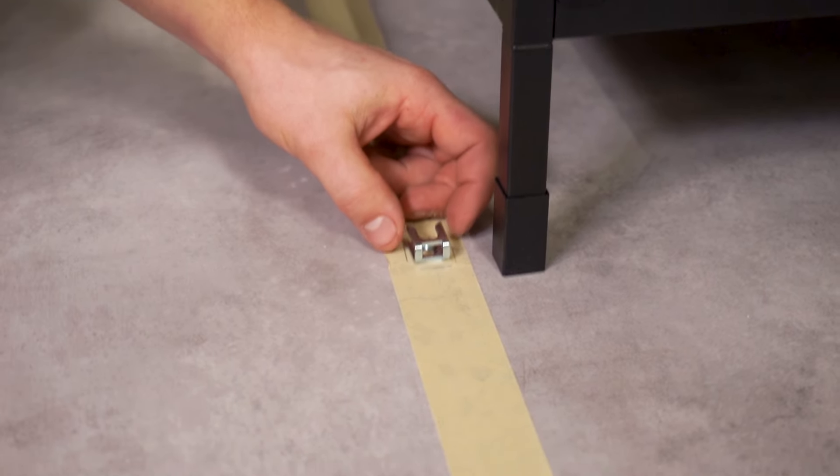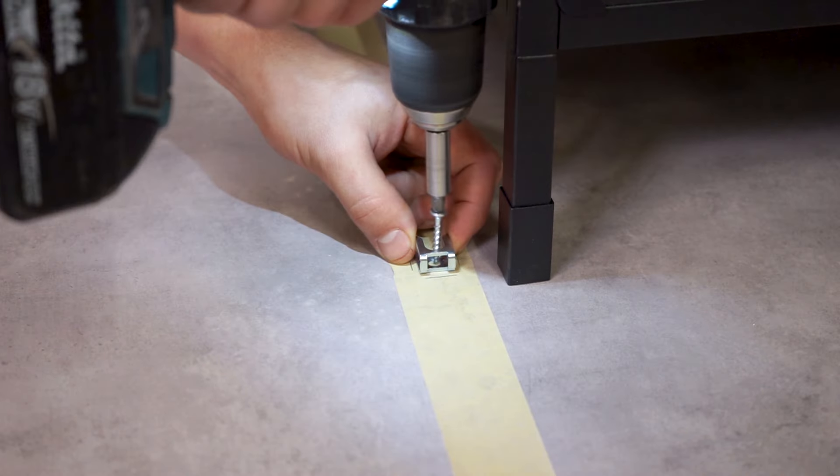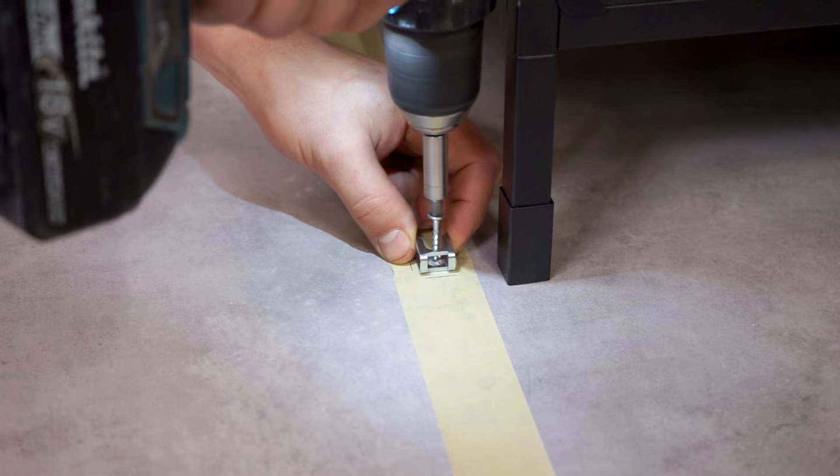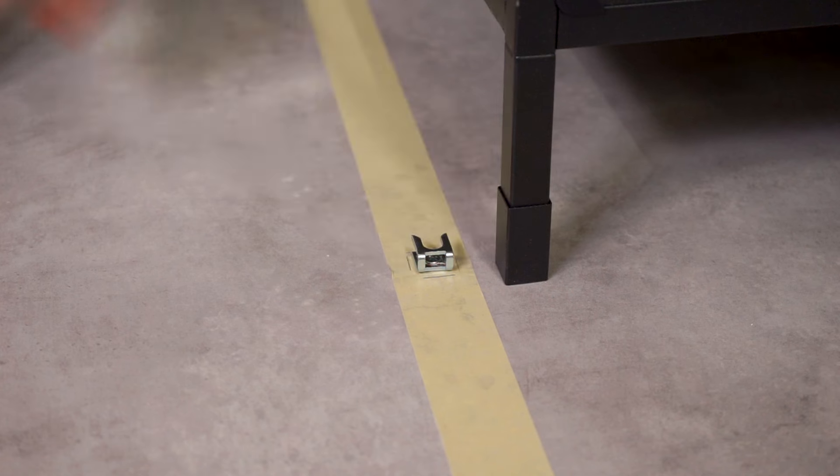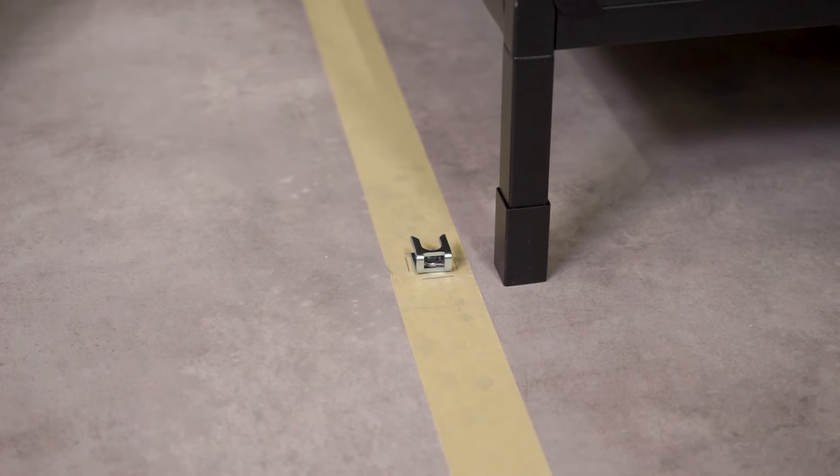Use the kitchen island installation kit. Attach the anchoring fittings to the floor. Make sure you don't damage any water or heating pipes or electricity cables hiding underneath the floor.